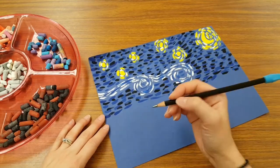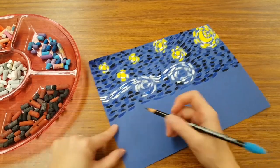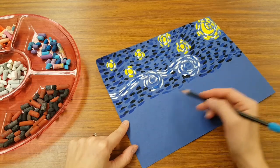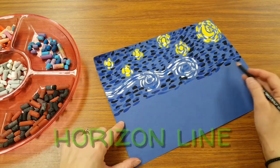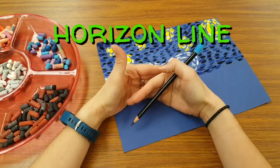And whatever you do, we're going to lightly plan with pencil first. This right here, where we made the bottom of your sky, this is the horizon line. It's where the ground and the sky meet.